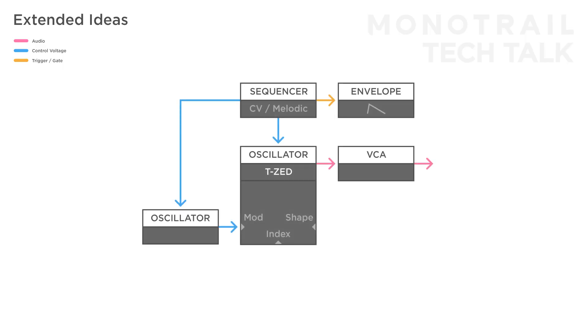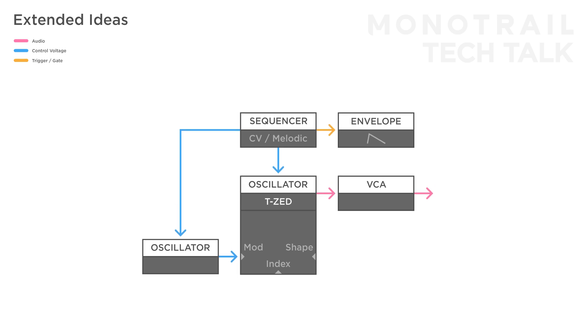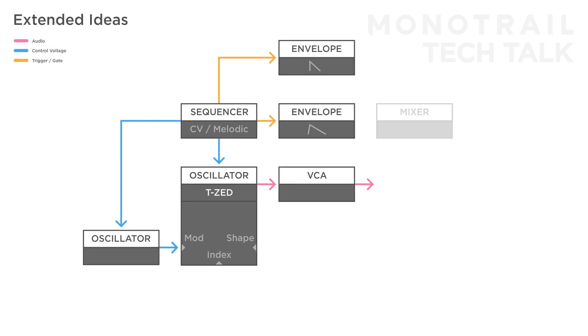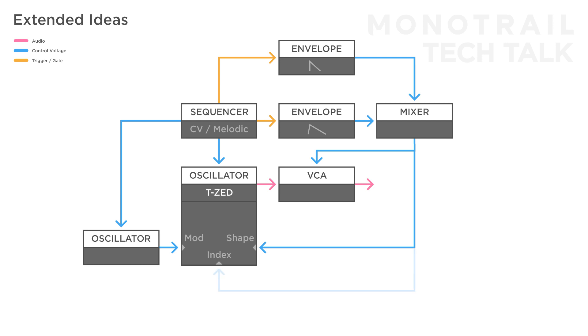Beyond the basic modulation of the mod and index, it's worth it to experiment with more complex setups. Here are a few ideas. You can expand on the previous setup by combining more than one modulation source. Beside using the gate from the sequencer, use the steady clock from the sequencer to trigger a second envelope with different settings. Then use a mixer to mix different amounts of those envelopes together before going to the VCA, shape and index. Tweaking the mixer by hand will give some interesting performance options.